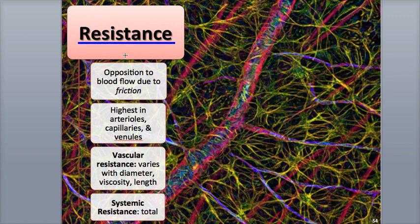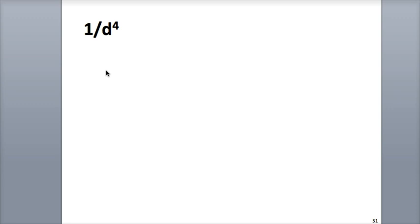Vascular resistance includes all of the opposing forces to the flow of blood through vessels. It's the result of friction generated between blood and the blood vessel walls. Remember that the lumen is the inner space within a blood vessel that blood flows through. The smaller the diameter of the blood vessel and the smaller the lumen, the greater its resistance to blood flow. Resistance is proportional to 1 divided by the 4th power of the diameter of the lumen. If a blood vessel's diameter decreases by one-half, resistance will increase by a factor of 16 times.